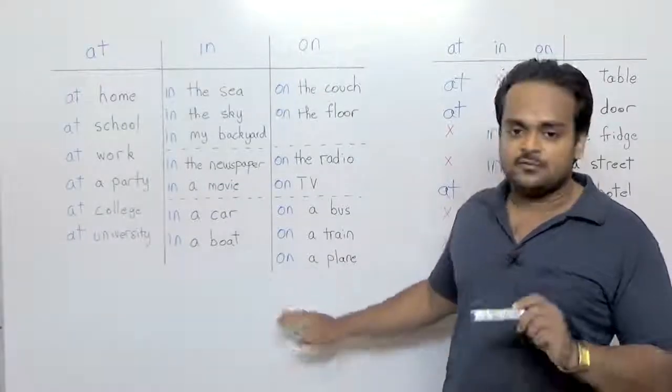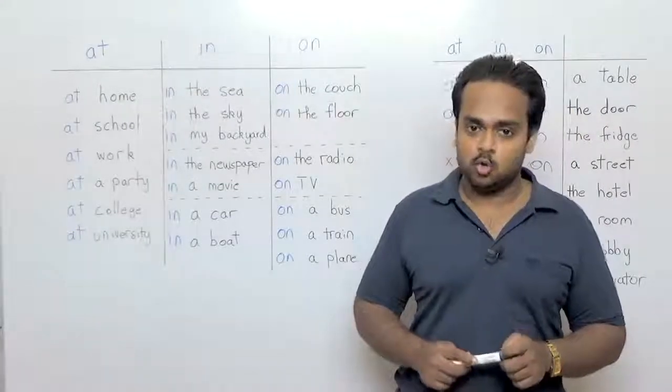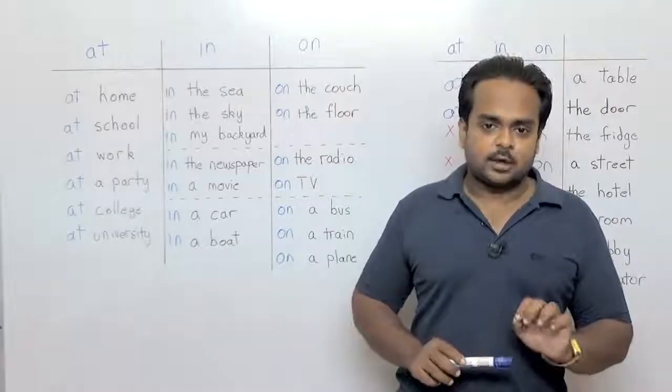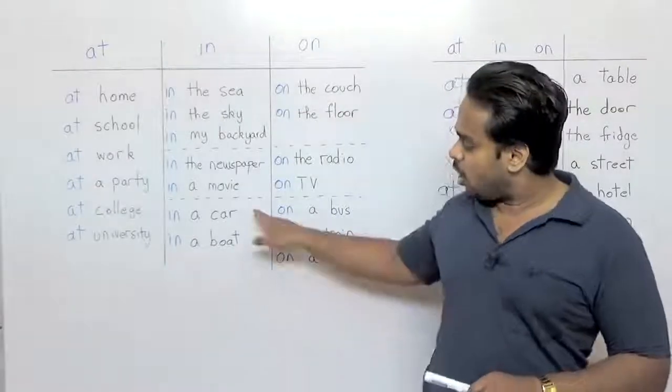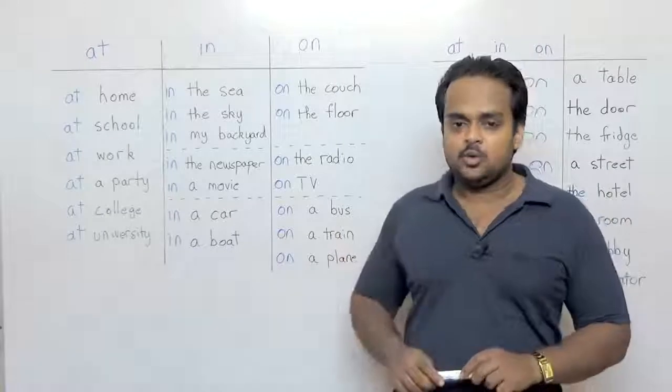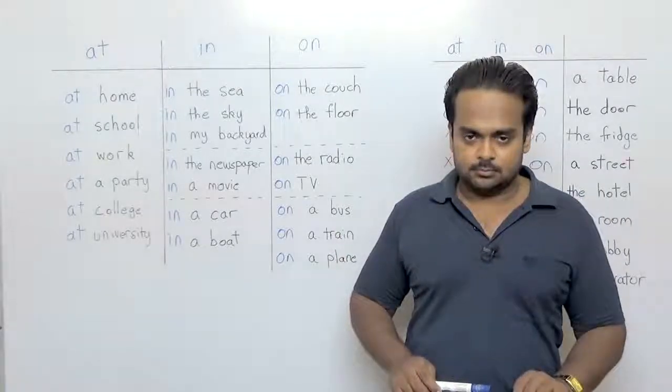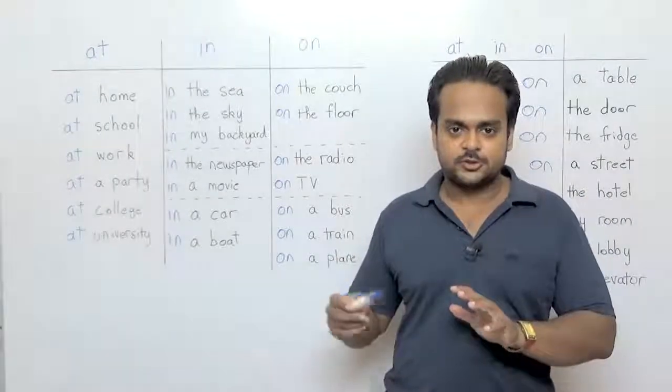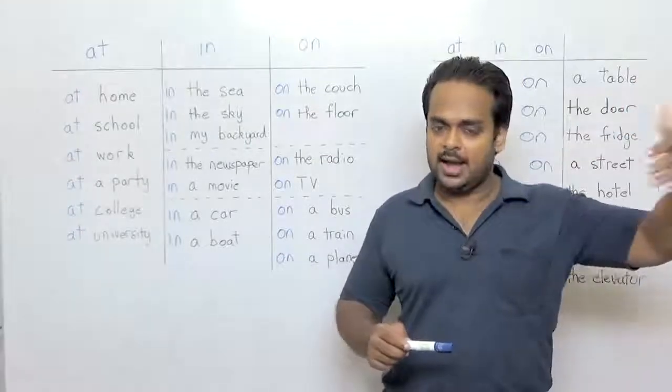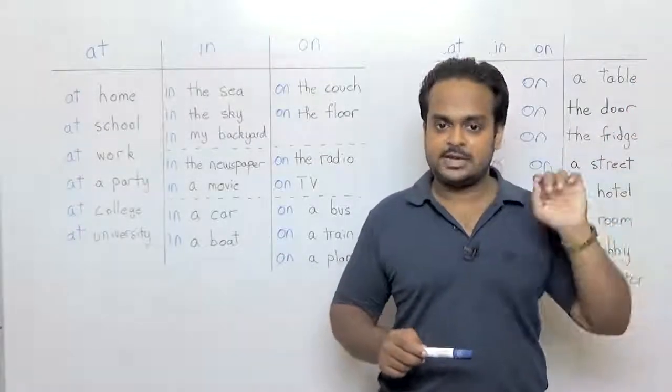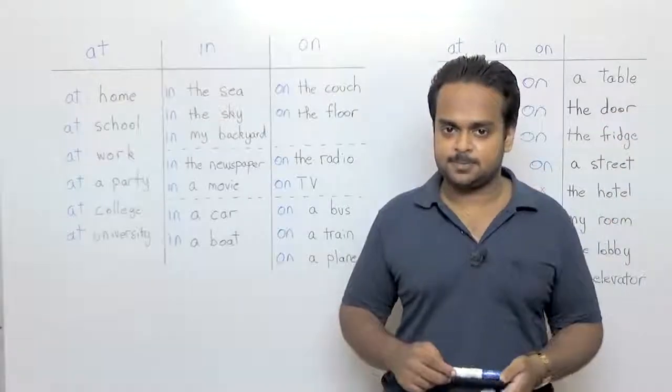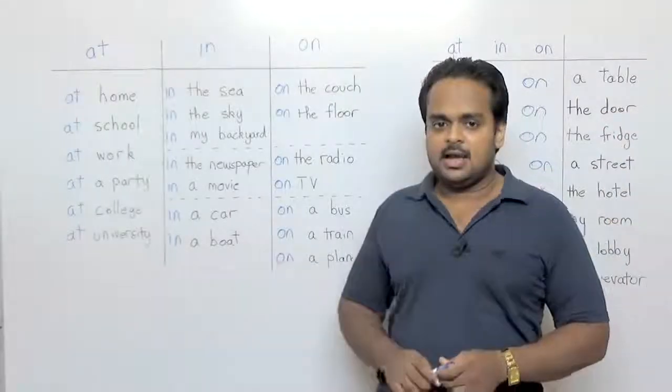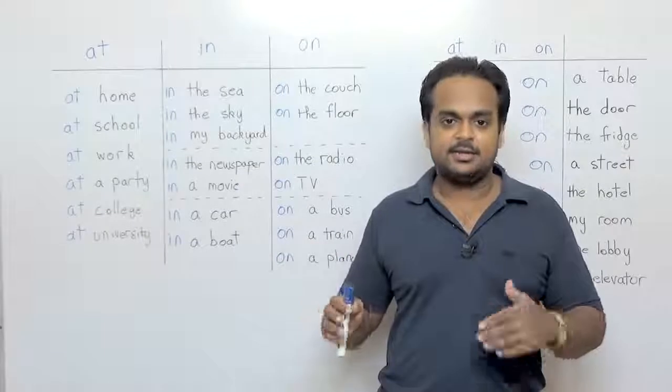Finally, let's talk about vehicles. Again, there is a rule. If you're talking about small vehicles like cars or boats then you will use in. For example, the bank robbers got in a car and escaped. So they got in a car and escaped.